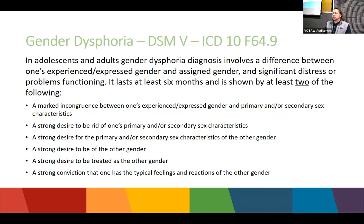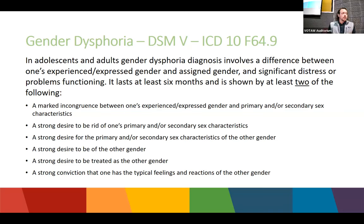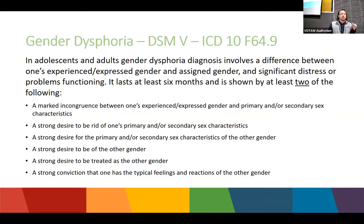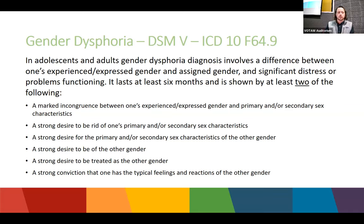Gender dysphoria — ICD-10 code F64.9. This diagnosis can be made by anyone, based on DSM-5 criteria. For adolescents or adults, they must experience at least two of the following for six months: a marked incongruence between expressed or experienced gender and natal sex characteristics; a strong desire to rid oneself of primary or secondary sex characteristics; a strong desire for the characteristics of another gender; a strong desire to be the other gender; to be treated as the other gender; or a strong conviction that one's reactions align more with the opposite gender.